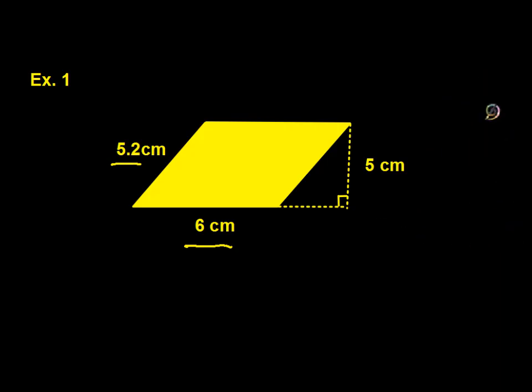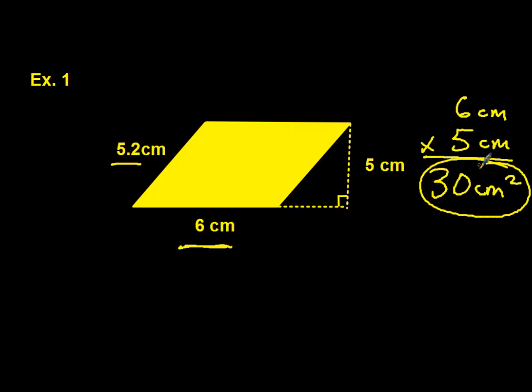Quite often, this is what will happen with a parallelogram. They'll give you the height measurement so you can calculate the area. So again, it's the base times the height. We can see the base is 6 centimeters times the height of 5 centimeters, which equals 30 centimeters squared. Now we have both our area and our perimeter.